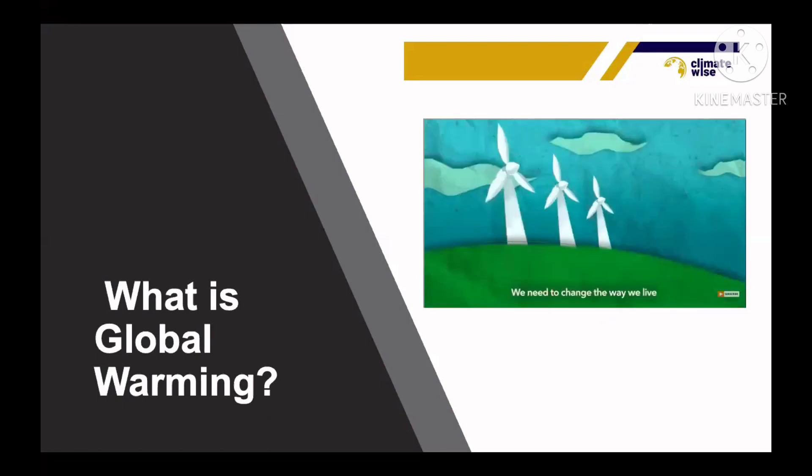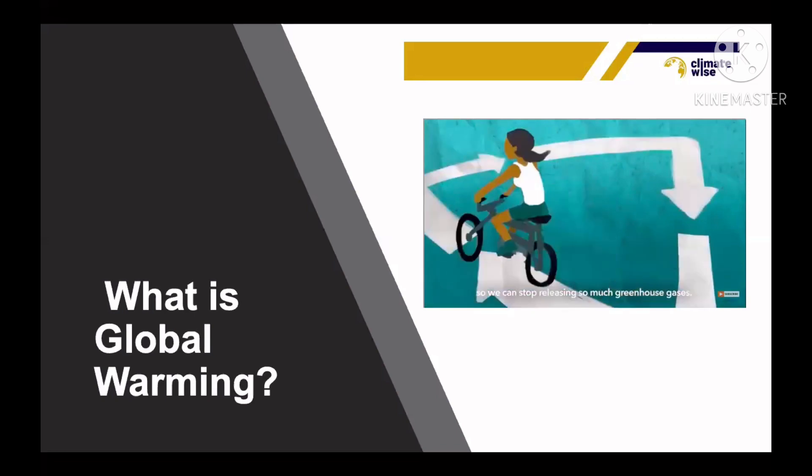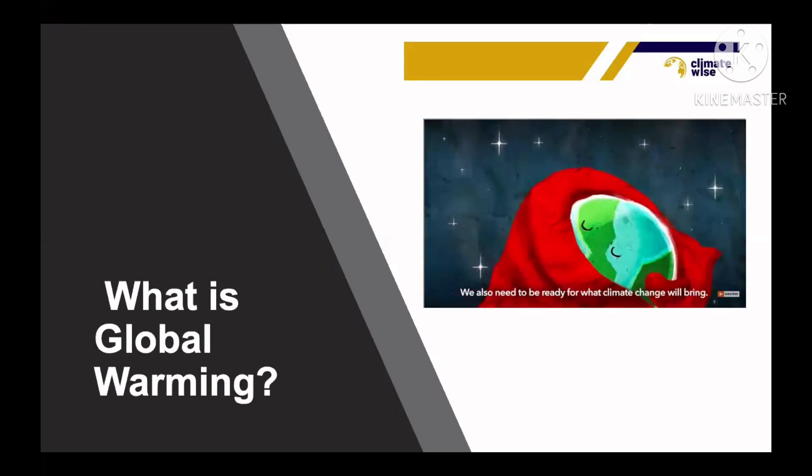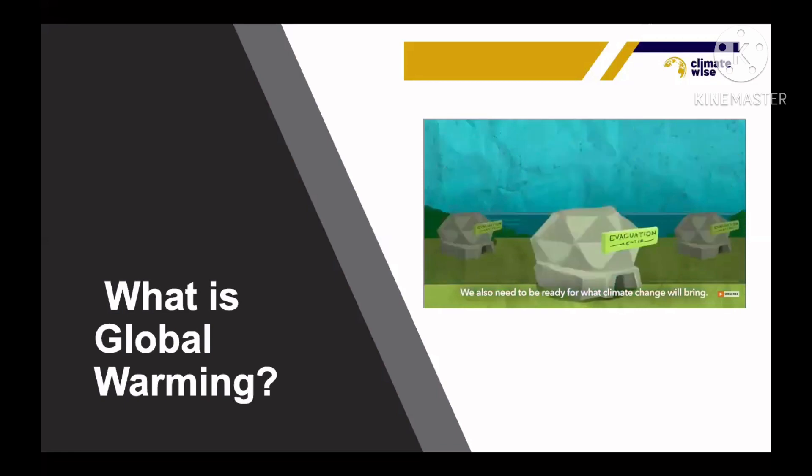So what should we do? We need to change the way we live, so we can stop releasing so much greenhouse gases. That way, the earth's blanket will go back to normal. We also need to be ready for what climate change will bring.